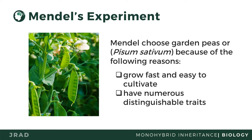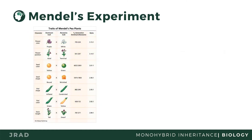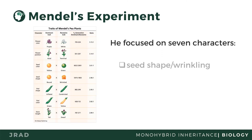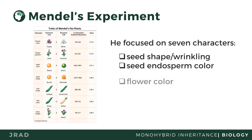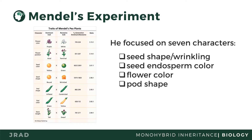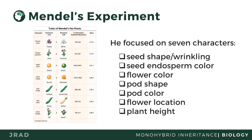There were seven traits of focus: wrinkles of the seed, color of the seed, color of the seed coating leading to the flower color, shape of the pod, color of the pod, location of the flower, and the height of the plant.